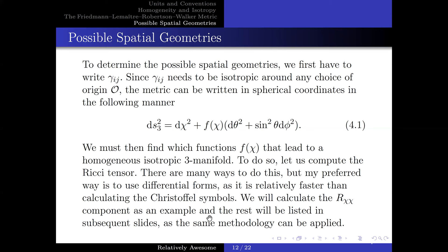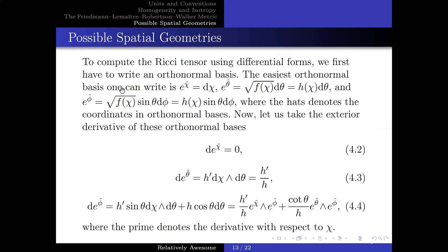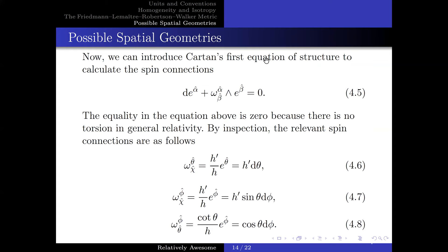We will calculate the R_χχ component as an example, and the rest will be listed in subsequent slides as the same methodology can be applied. To compute the Ricci tensor using differential forms, we first have to write the orthonormal bases. The easiest orthonormal bases one can write is as follows, where the hats denote the coordinates in the orthonormal bases. And now, let us take the exterior derivatives of these orthonormal bases. And we yield the following, where the primes denote the derivatives with respect to χ.